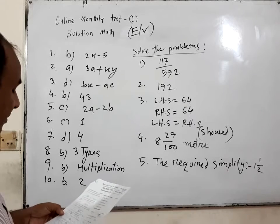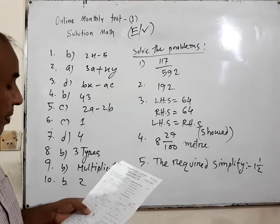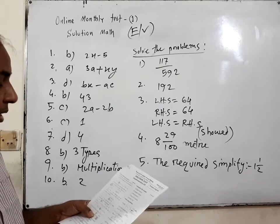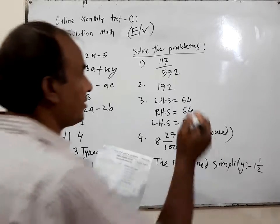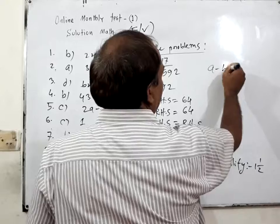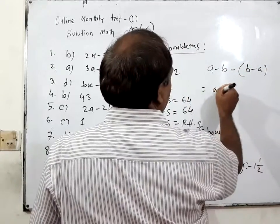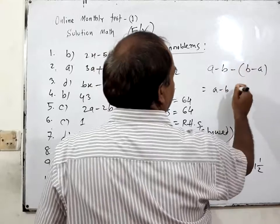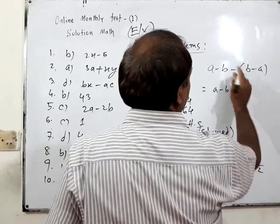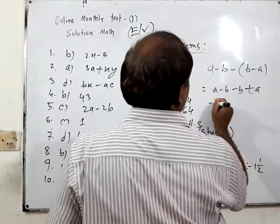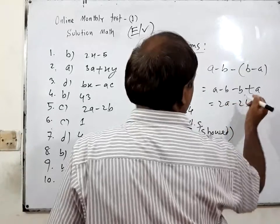Number 5. Subtract B minus A from A minus B. The solution is A minus B minus parentheses B minus A, which equals A minus B plus A minus B, that means 2A minus 2B.